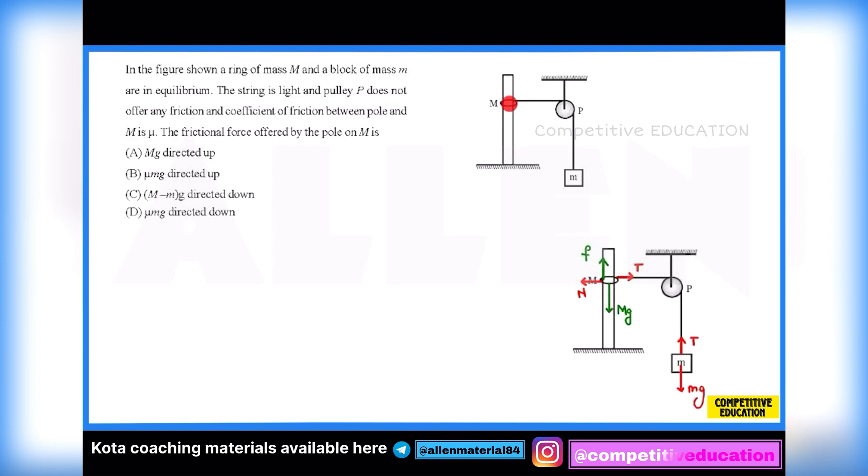In this question, a system is given in which there is a ring of mass capital M tied to a block of mass small m with the help of a string going over a pulley which is massless and frictionless, meaning tension on both sides remains the same. Now we have to find the friction force offered by this pole to this ring so that this whole system remains in equilibrium.